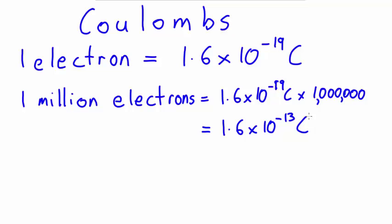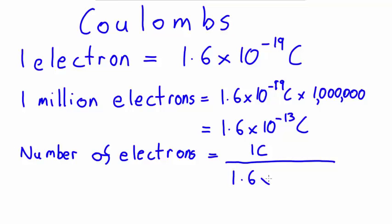So for example, if I wanted to know how many electrons were in 1 coulomb of charge, it would be 1 coulomb divided by the amount of charge on each electron. Which, if I put that into my calculator, gives me 6.25 times 10 to the 18 electrons.